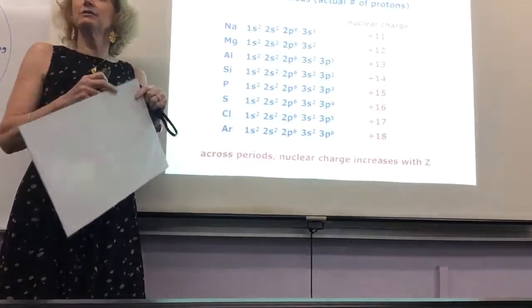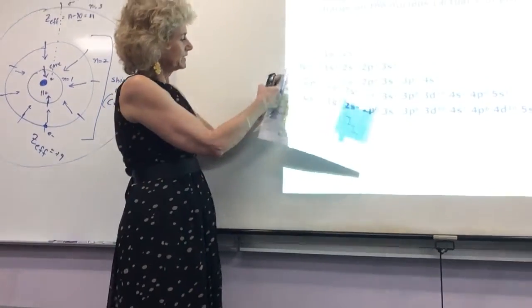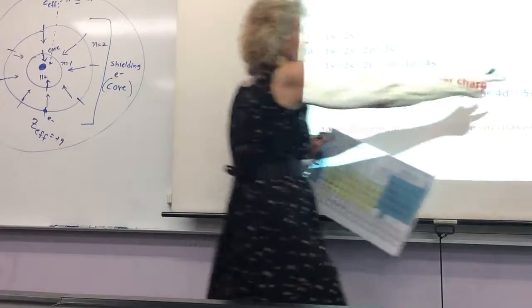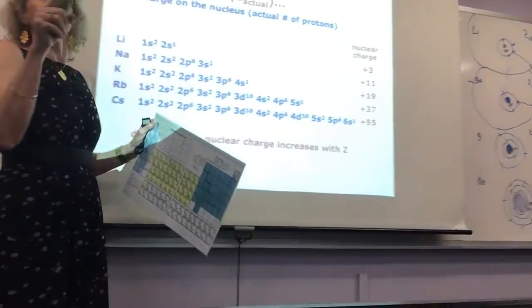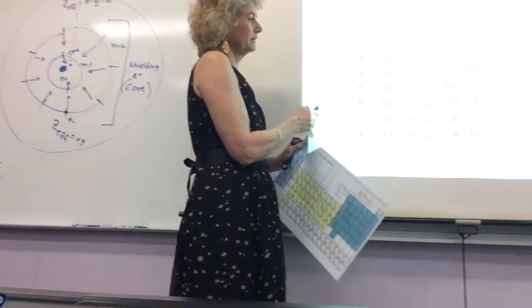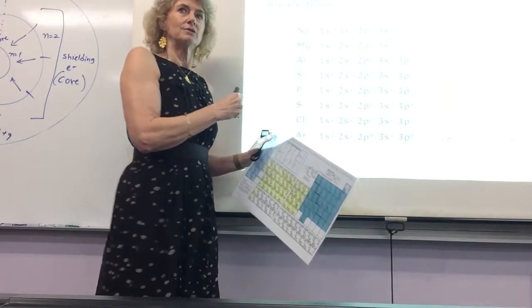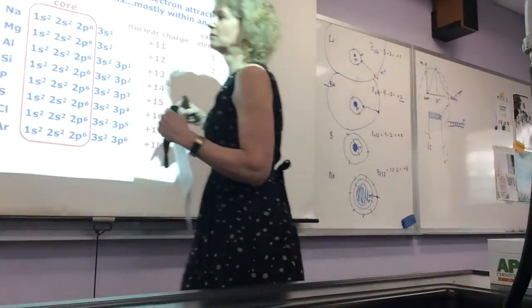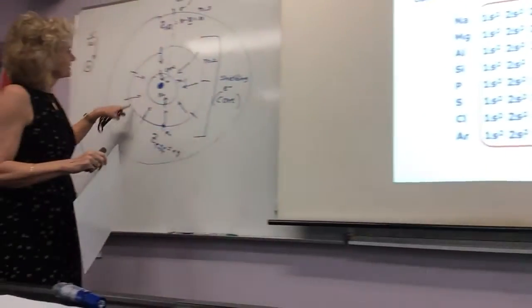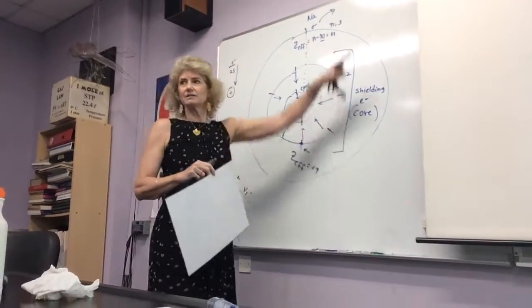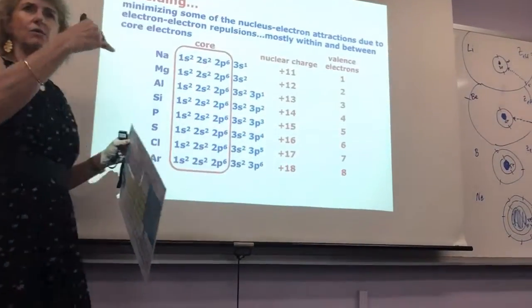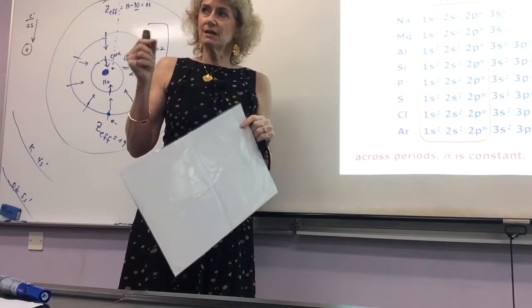As you go across a period, Z effective gets bigger — we went from positive one to positive eight because the shielding in this example stays at two. When you go down the group — from lithium to sodium — you add a bunch more core because you're one more shell out. So the core got bigger, and that means Z effective decreases. When Connor is at n=5, he's got a whole bunch of shielders, so he's not feeling a strong attractive force to the nucleus — and therefore it's very reactive.